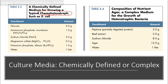In chemically defined media, the sole carbon and energy source is glucose. Ammonium phosphate provides nitrogen and phosphate, sodium chloride provides sodium and chloride ions, magnesium sulfate and potassium sulfate provide additional salts, and water is the matrix. These are all the components needed for survival in one liter of broth medium. For comparison, the composition of nutrient agar is a complex medium for the growth of heterotrophic bacteria.